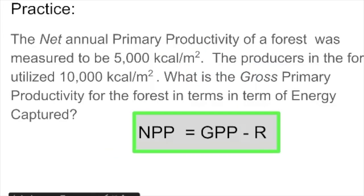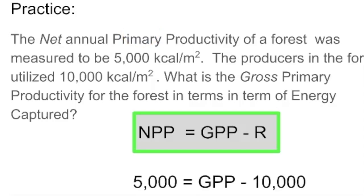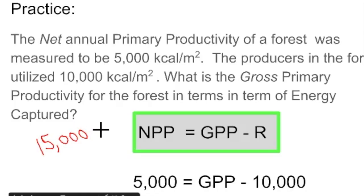One more practice problem before I show you some really cool things. Read the problem, pause the video, and see if you're right. We are looking for the gross primary productivity. Plug in the rest of the values and you get an answer of 15,000 kilocalories per meter squared over the course of a year. Awesome job if you got that answer.